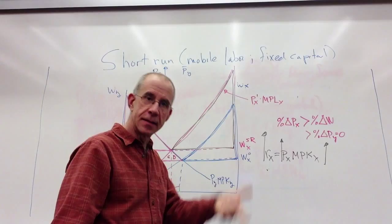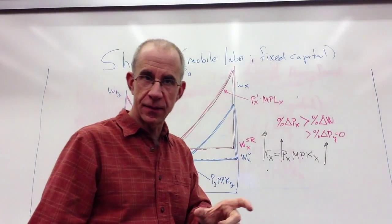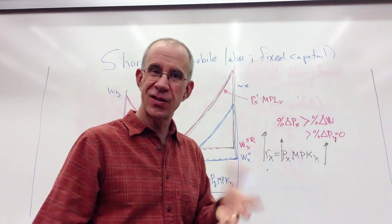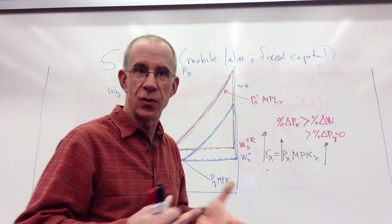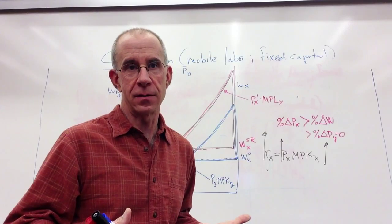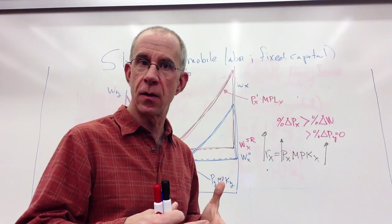Capital owners in Y, exactly the opposite. Those capital owners can buy less of X and less of Y. So they're unambiguously worse off. So, bottom line is if you can't move, your interests are tied to the industry where you're located. If that industry is expanding, you do well. If that industry is contracting, you're really hit hard.